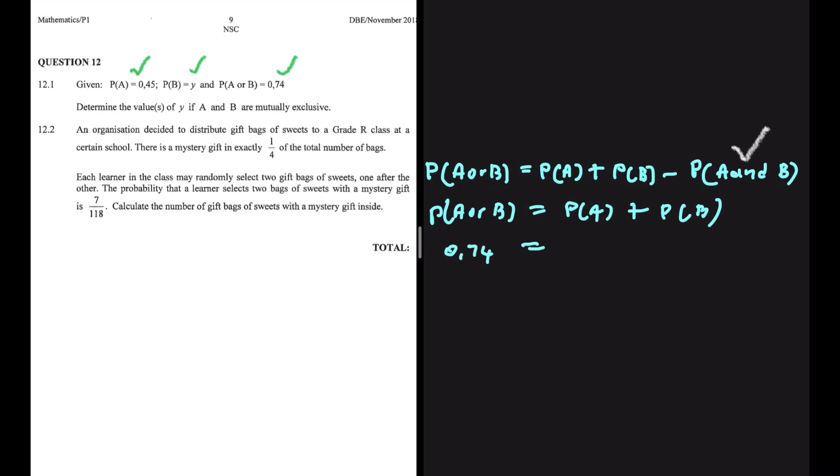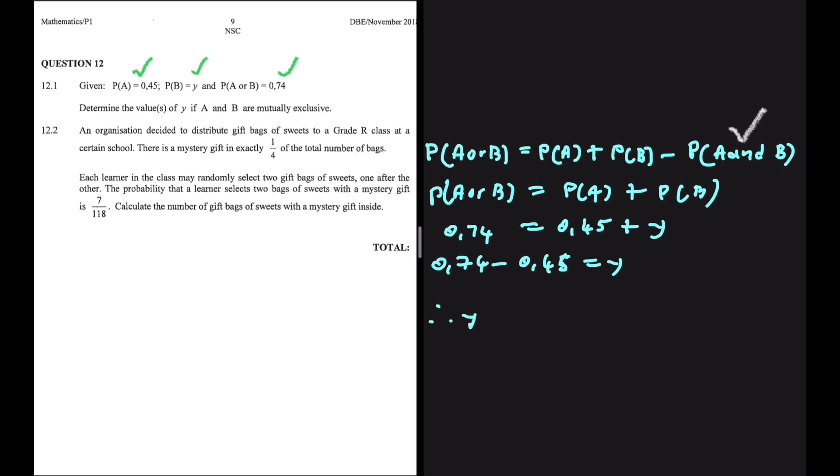The probability of A is 0.45 and the probability of B is Y. If we say 0.74 minus 0.45, we shall get the value of Y. Y is equals to 0.29.